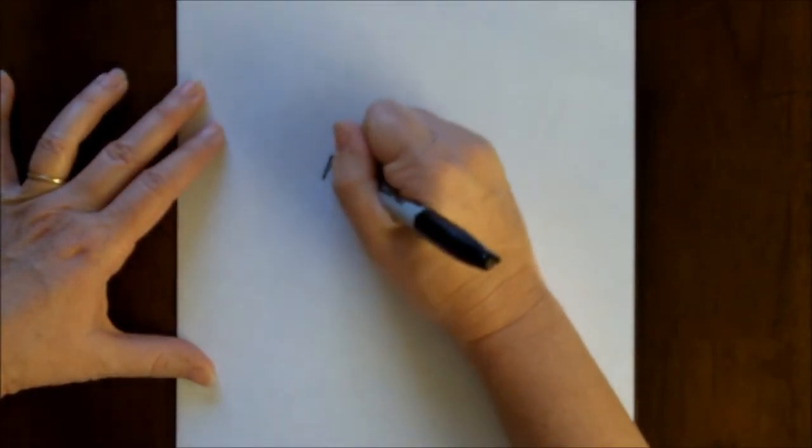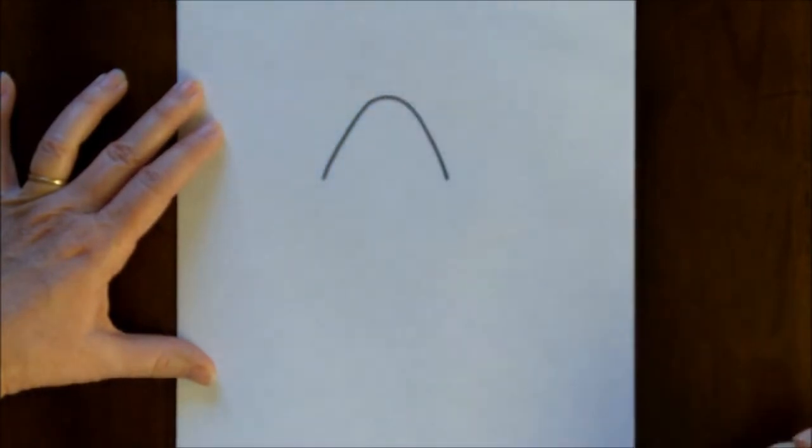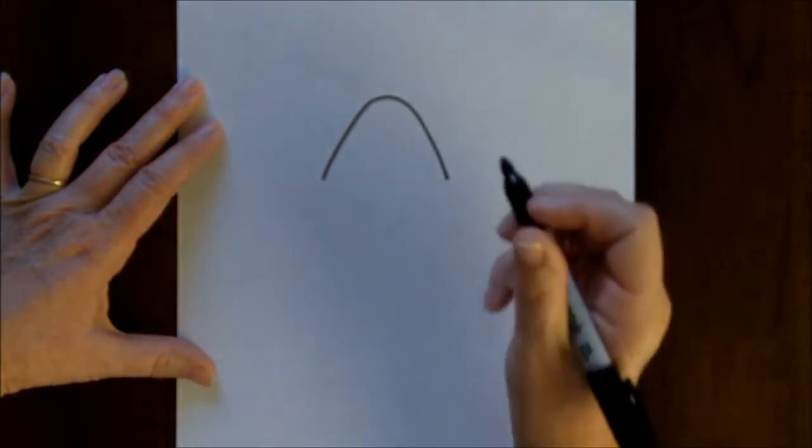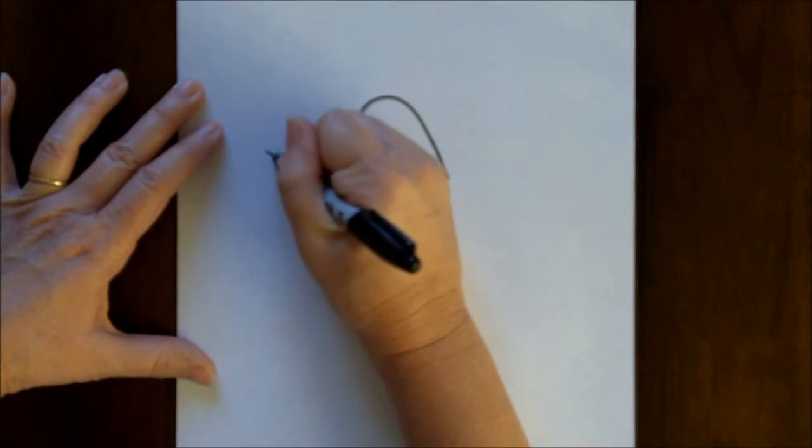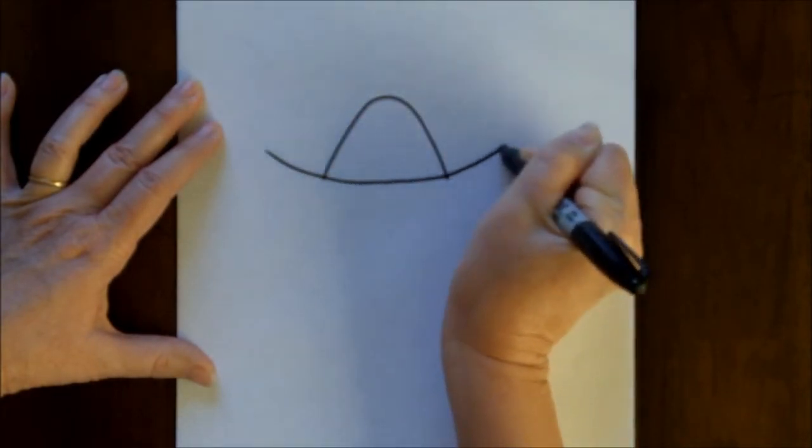We're going to start out with an upside down U that's a little bit pointy at the top. Now we're going to make a curved line that touches both ends of that upside down U.